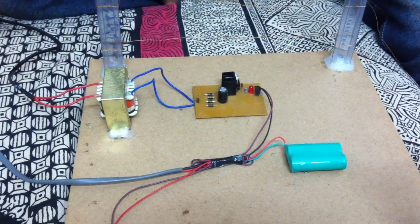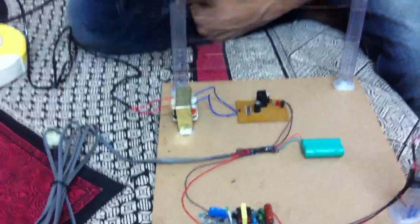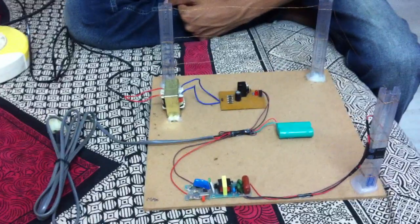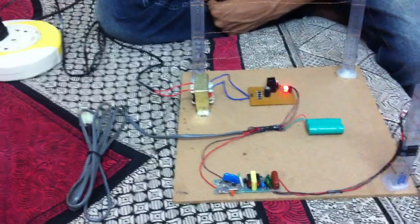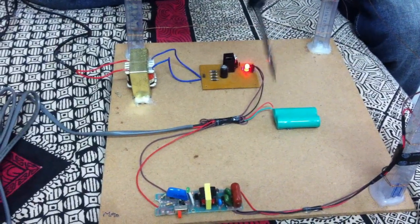So you can charge the battery through the power supply or through the solar panel. Let me show you. When I switch on the power supply you can see that this LED is glowing which means the battery is getting charged.